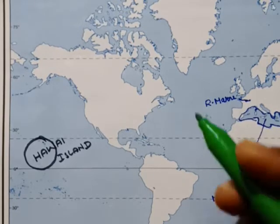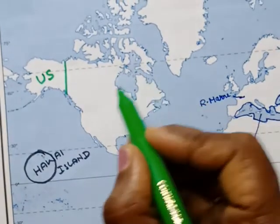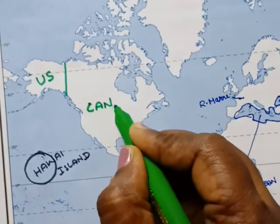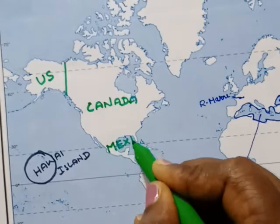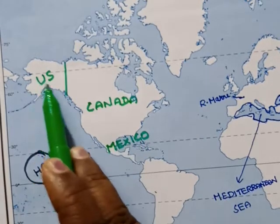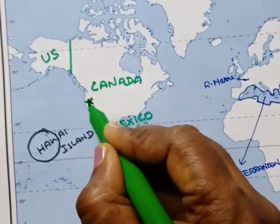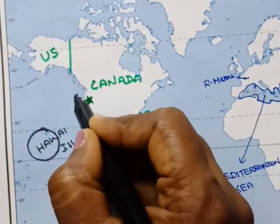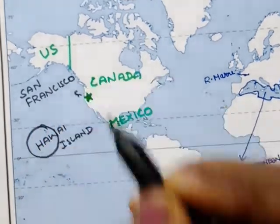Here is US — United States. Here are the other places. This is Canada. This is Mexico. So in North America: US, Canada, Mexico. Here is one place — this is San Francisco.